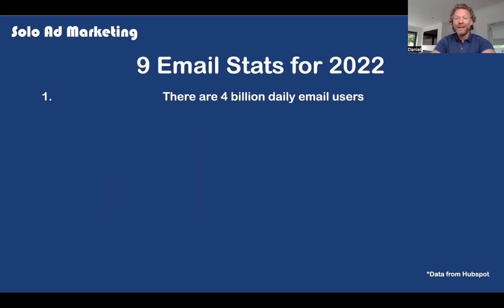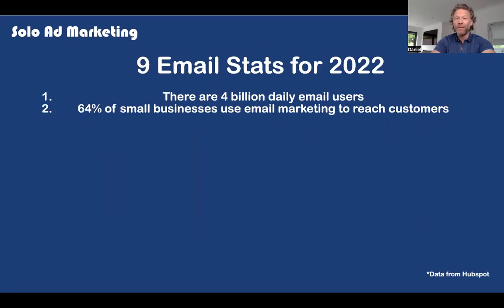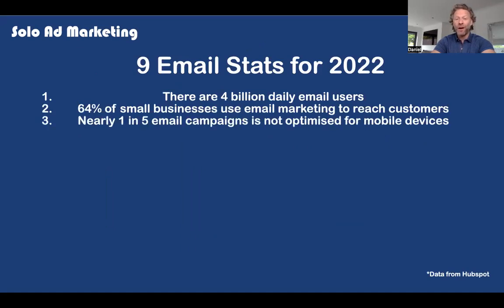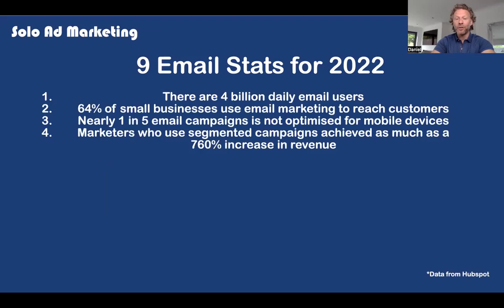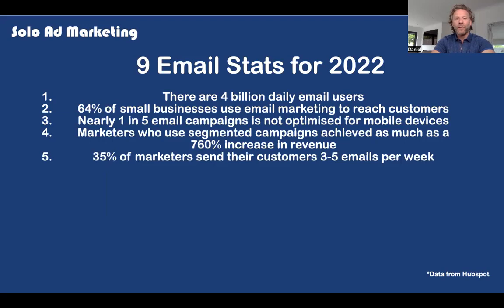So why is email still so powerful in 2022? Quick nine stats. There are over 4 billion daily email users. 64% of small businesses use email marketing to reach customers. Nearly one in five email campaigns is not optimized for mobile devices — think about that as an opportunity. Marketers who use segmented campaigns achieve as much as a 760% increase in revenue. So segmenting our lists — once we start to build our list by gender, age, ethnicity — and how we talk to each individual, we can speak to them really directly. 35% of marketers send their customers three to five emails per week. Are you emailing enough?